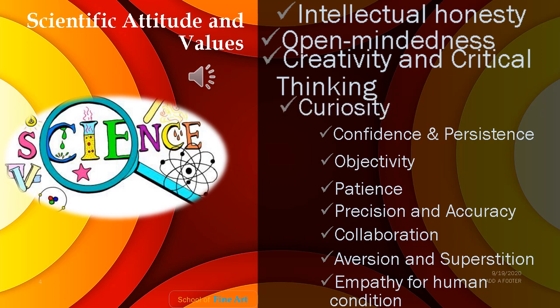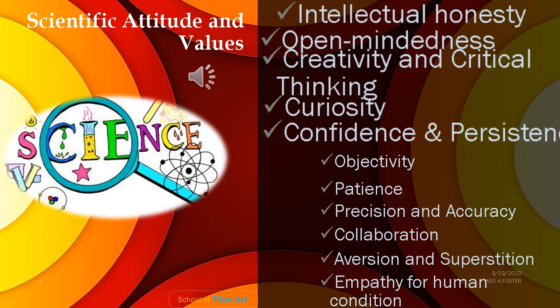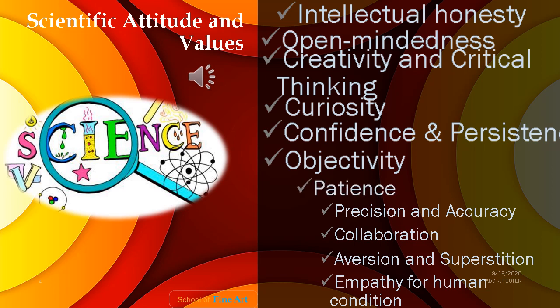Fourth, curiosity — try to learn about the things around you and investigate their phenomena. Fifth, confidence and persistence — continue a project despite obstacles and failure; no guts, no glory. Sixth, objectivity — take clear results of your experiments based on observation and not influenced by emotional or personal prejudices. Seventh, patience — do not jump to conclusions. Withhold your judgment until the tests have been completed, and do not accept ideas until an exhaustive investigation has been performed.